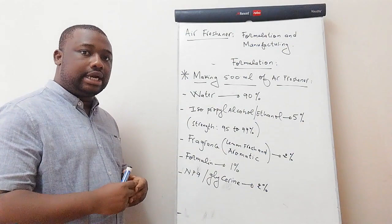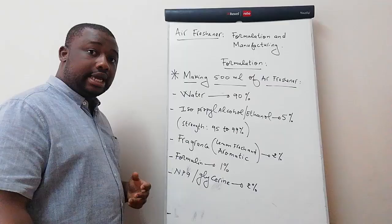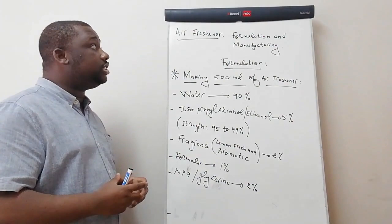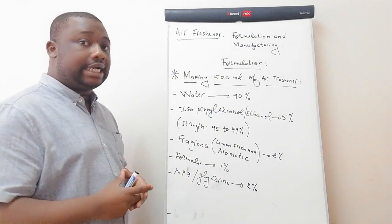The next ingredient is formalin. And the next ingredient is NP9 or glycerin — you use one of the two. The reason for using NP9 or glycerin is to bring some moisture, because this is an air freshener with a function of refreshing air, so it should not be too dry.